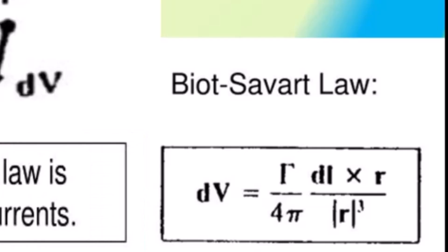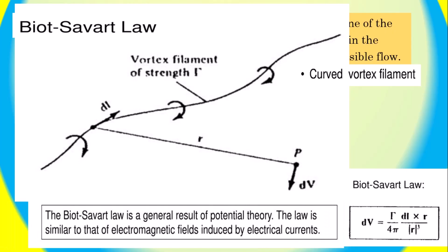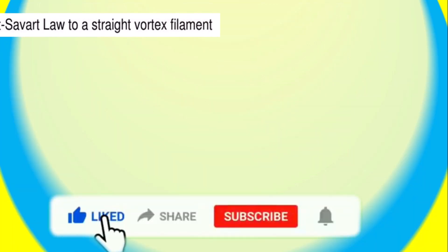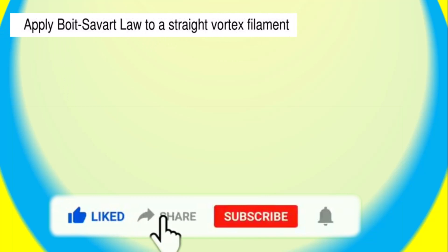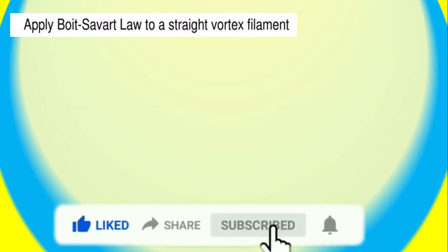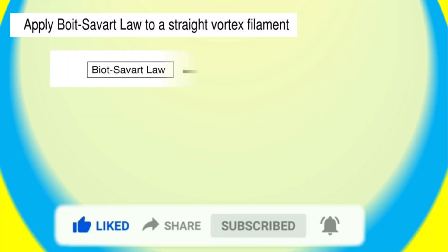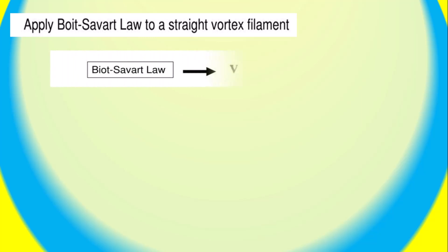Where dL is a small segment of the vortex filament, r is the position vector of point P relative to the segment, and gamma is the strength of the filament. Let us apply the Biot-Savart law to a straight vortex filament of infinite length, as shown on the video. The strength of the filament is gamma.